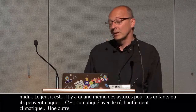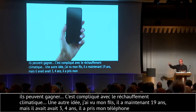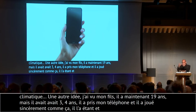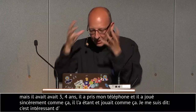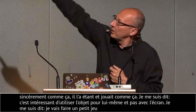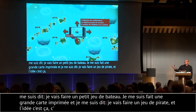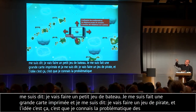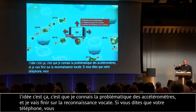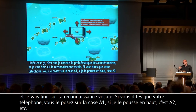J'ai vu mon fils — il avait 3-4 ans, il a pris mon téléphone, le premier iPhone, et il jouait. L'écran était éteint et il faisait l'avion comme ça. Je me suis dit : c'est intéressant d'utiliser le jeu pour l'objet lui-même et pas pour ce qu'il y a dedans. Je me fais une grande carte imprimée, je me suis dit : je vais faire un jeu de pirate. L'idée toute bête — je connais les accéléromètres. Si vous posez votre téléphone sur la case A1, quand je le pousse vers le haut, il déduit qu'il est sur la case A2. Quand je vais à gauche, il est sur B1.